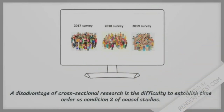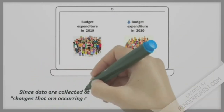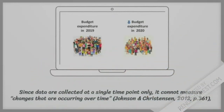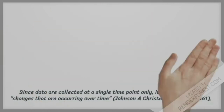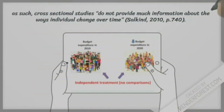A disadvantage of cross-sectional research is the difficulty to establish time order as condition 2 of causal studies. Since the data are collected at a single time point only, it cannot measure changes that are occurring over time. As such, cross-sectional studies do not provide much information about the ways an individual changes over time.